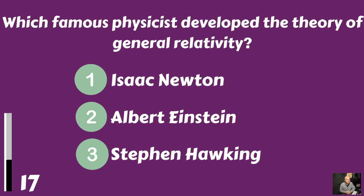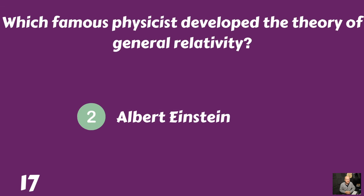Which famous physicist developed the theory of general relativity? Isaac Newton, Albert Einstein, or Stephen Hawking? The theory of general relativity was developed by Albert Einstein.